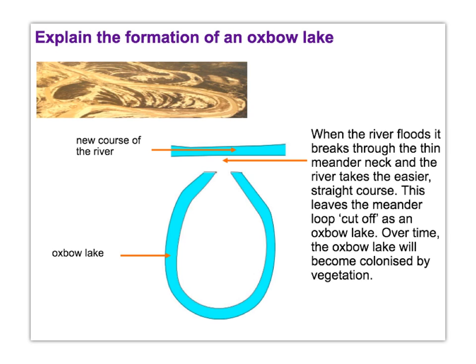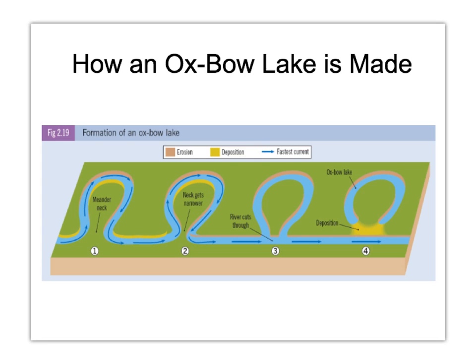As you can see, the river used to flow along here and then we've got the meander. The neck is getting smaller because on the outside bend there's a lot of erosion, while deposition happens on the inside. Because of erosion on both outside bends, this neck is getting smaller and smaller, and eventually the river decides to cut straight through the neck of the meander, which breaks off the oxbow lake.